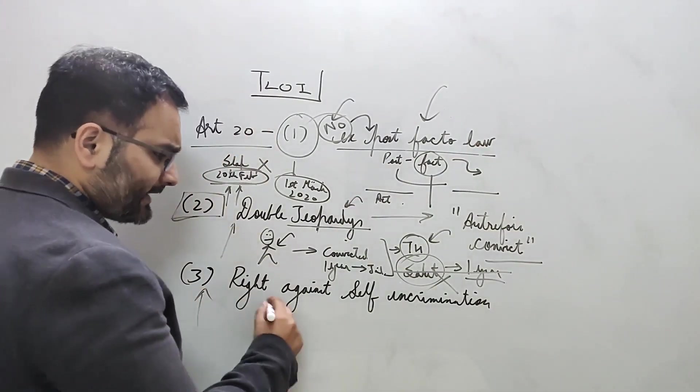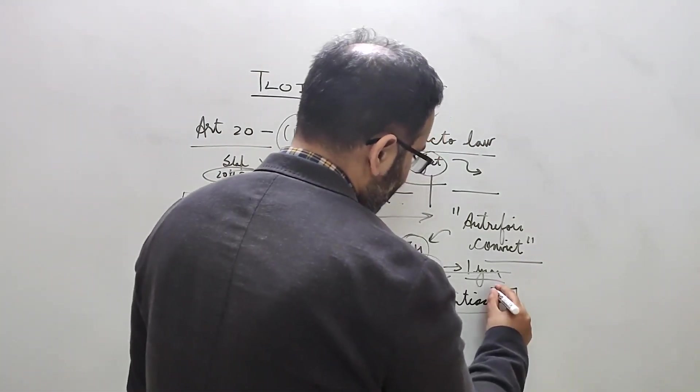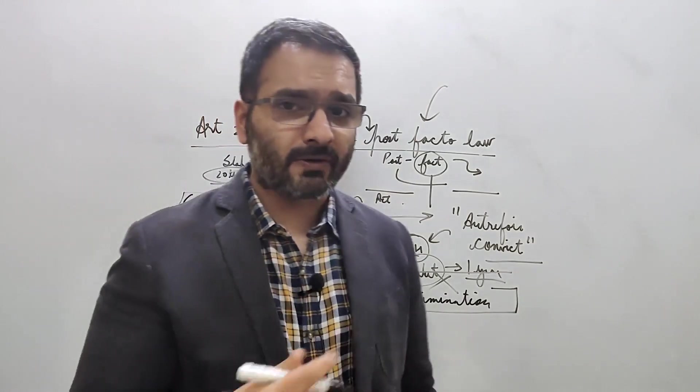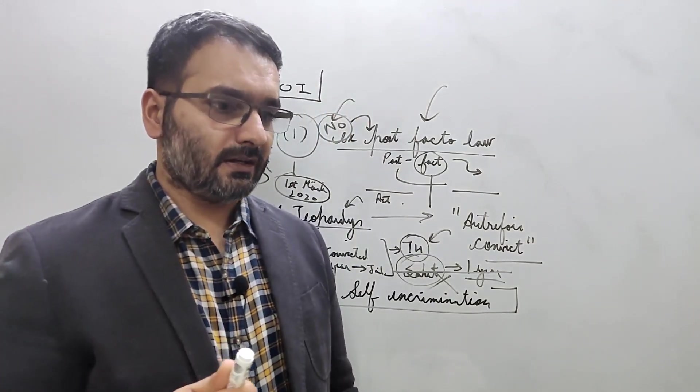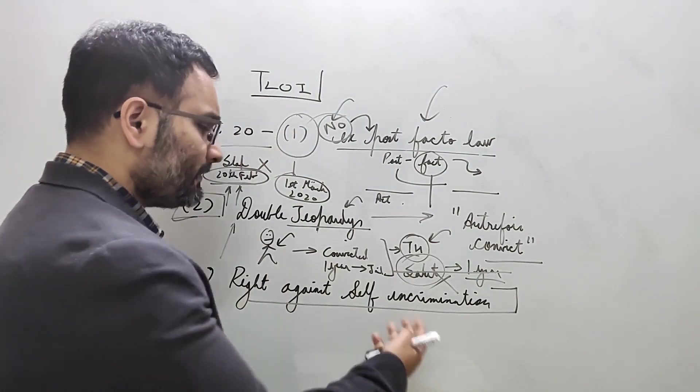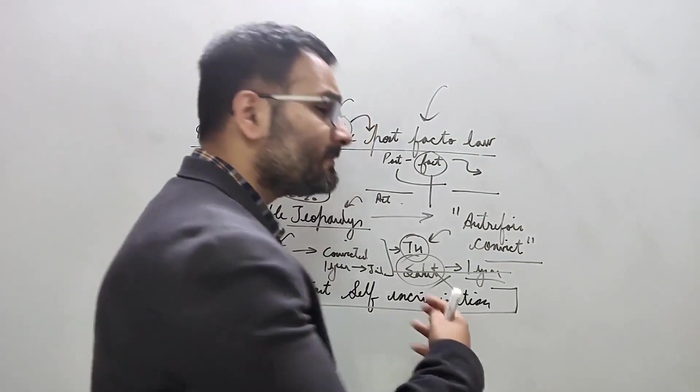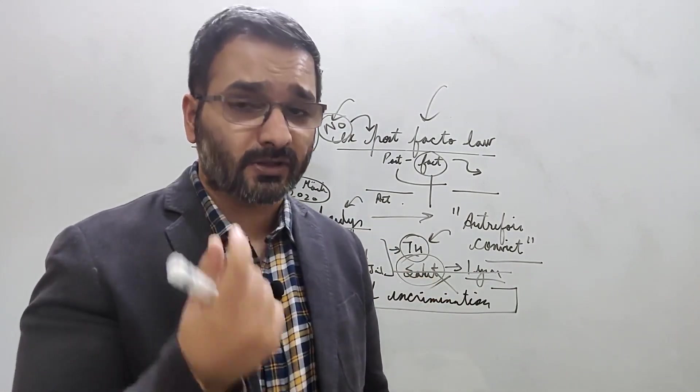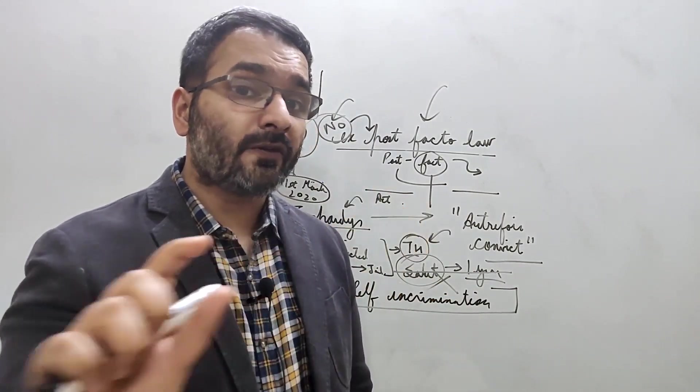I have a right against self-incrimination. Now the keyword here is 'accused of an offense.' This is a very popular CLAT legal reasoning question - the police gives you a breathalyzer test and you read out clause 3 to them that 'Look, I have a right against self-incrimination, meaning I won't speak against myself if you have accused me of an offense.' The keyword is 'accused of an offense.'